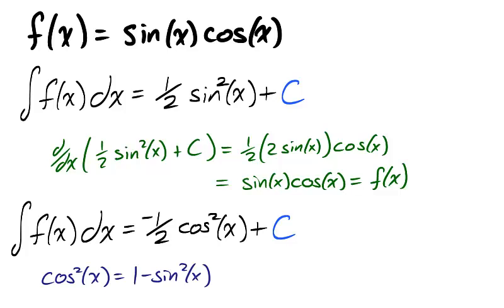Well, cosine squared is 1 minus sine squared. So negative 1 half cosine squared can be written as 1 half sine squared x minus 1 half. Here, c is negative 1 half.